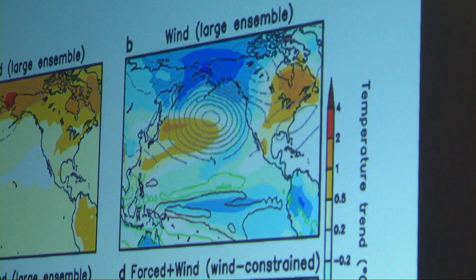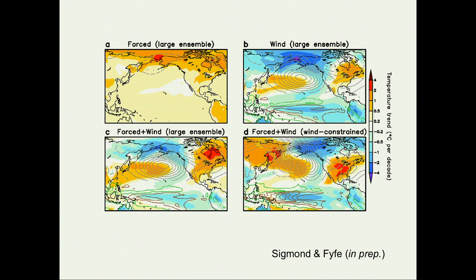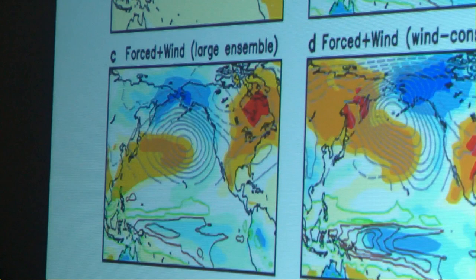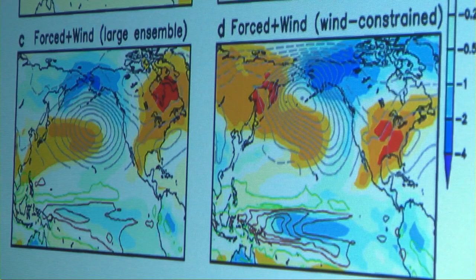This is a measure of internal variability. Adding the forced response — the average across all members where you see warming — gives panel C. This is what the large ensemble suggests is the connection between trade wind intensification and temperatures over North America: a warming, not a cooling. And that's also what we see in the average over our pacemaker experiments. The two look very similar and indicate that Palmer was perhaps incorrect, if you believe this particular model.